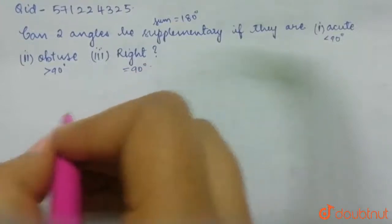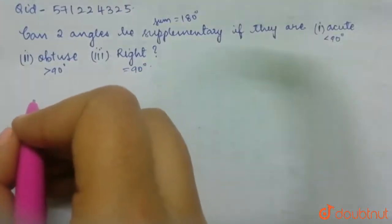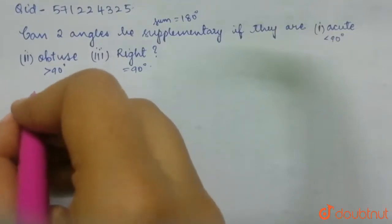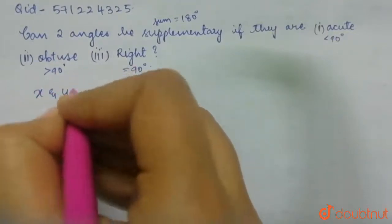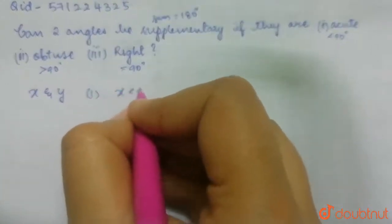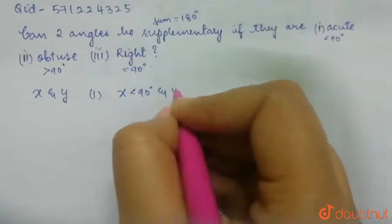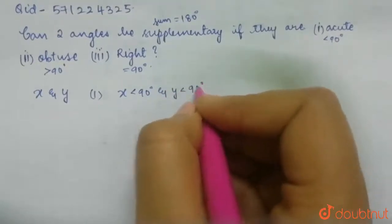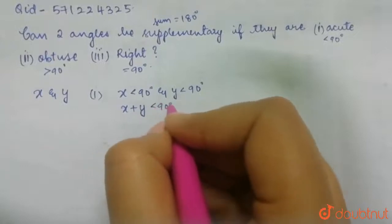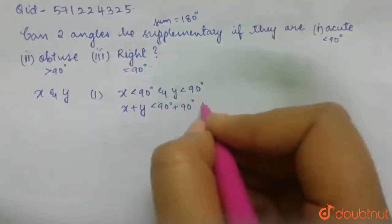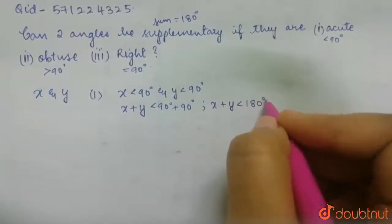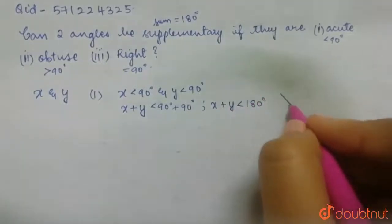So first, here the question is: can two angles be supplementary if they are acute, obtuse or right? Let's consider two angles, x and y. In the first case, they are acute. So x is less than 90 degrees and y is also less than 90 degrees. Adding them: x plus y is less than 90 degrees plus 90 degrees, which gives x plus y less than 180 degrees. So here, they are not supplementary.